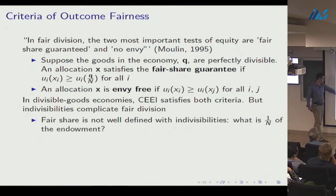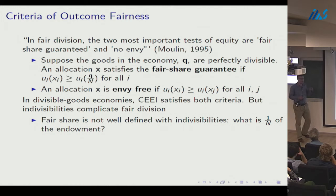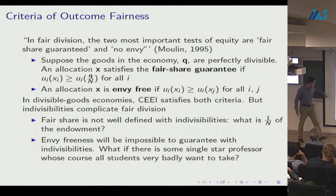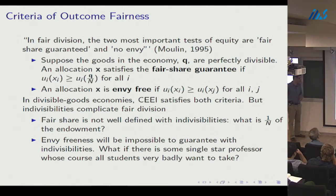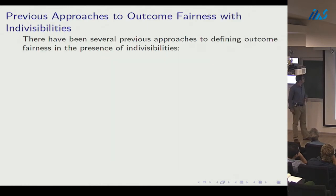With indivisible goods, fair share is not well-defined since 1/n of the endowment isn't a well-defined concept. Envy-freeness is well-defined but too strict — if there's a star professor or a big diamond, someone will envy someone else. There have been several previous approaches to outcome fairness with indivisibilities: allowing money, assuming indivisible goods are divisible in a pinch, or assessing fairness at an interim stage rather than ex post.